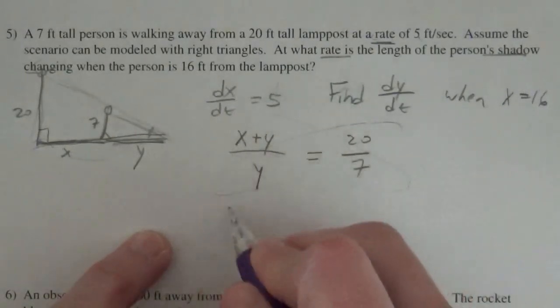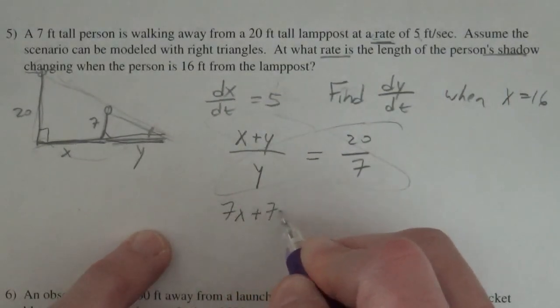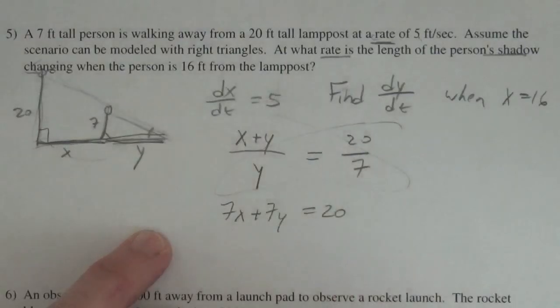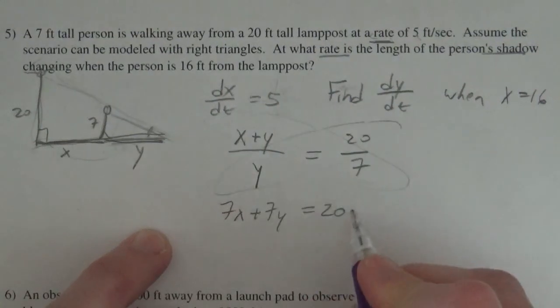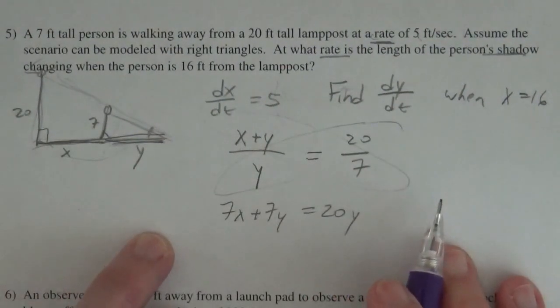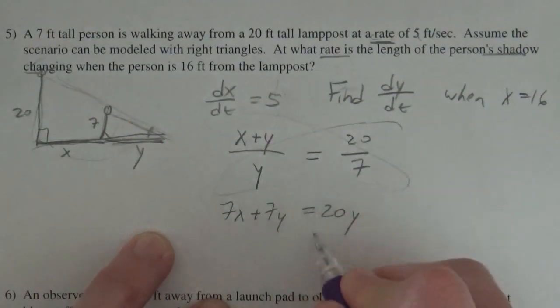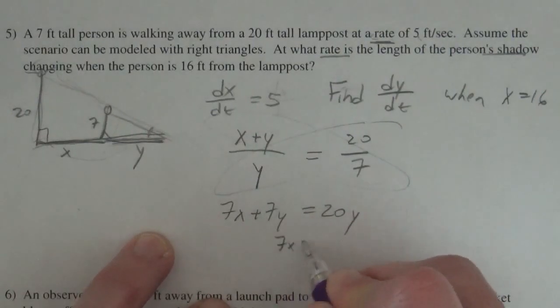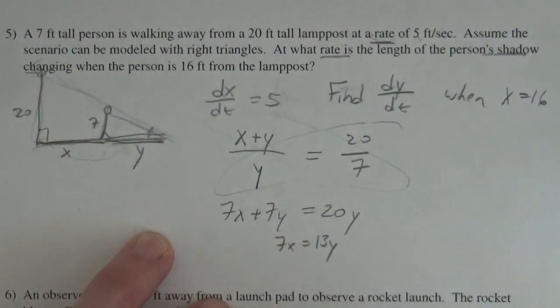So if I have 7x plus 7y equals 20y after I cross multiply, I'll get this 20y, and so I get 7x equals 13y if I subtract the 7y.